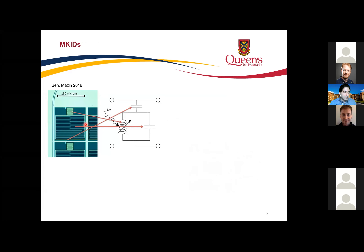An MKID looks like this as a single pixel. You put different pixels designed for different resonance frequencies. The sensitive part is the inductive part, and the capacitive part is for tuning the resonance frequency. You couple this resonator to a transmission line via either capacitive or inductive coupling. For the optical range of MKIDs, we usually use capacitive coupling.